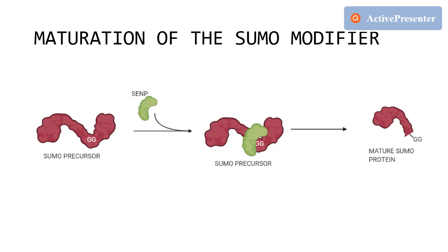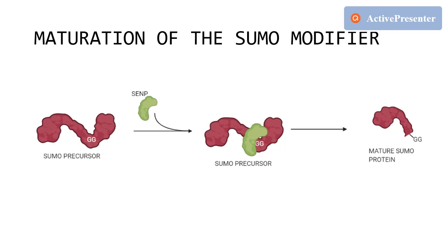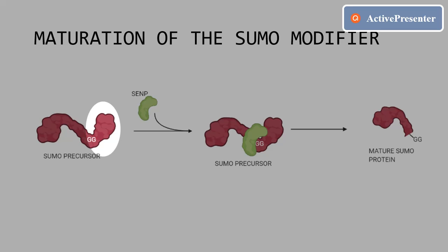SUMO peptides are around 11 kDa in size and closely resemble the 3D structure of ubiquitin. The human genome alone codes for four distinct SUMO proteins. They all carry an unstructured tail of 10 to 25 amino acids at their N-terminal, whose only function found so far seems to be the formation of SUMO chains. All immature proteins or precursors carry a C-terminal stretch of 2 to 11 amino acids after an invariant double glycine motif that marks the C-terminal of the mature protein.